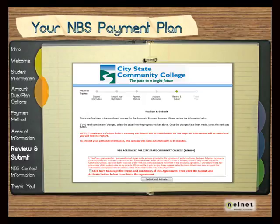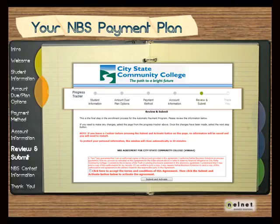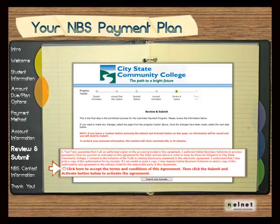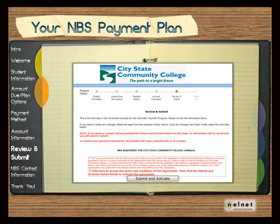After selecting the Next Step button, you will be taken to the Review and Submit page. Take a few minutes to review all information for accuracy. It is important that you review the terms and conditions prior to submitting your payment plan. If anything needs to be updated, use the progress tracker at the top of the page to go back and make corrections or changes. Once you have verified that all information is accurate, agree to the terms and conditions by selecting the box, then click on the Submit and Activate button. The Submit and Activate button is located at the top of the page as well as at the bottom.